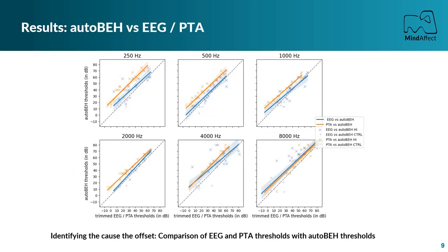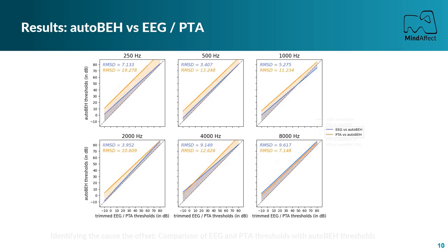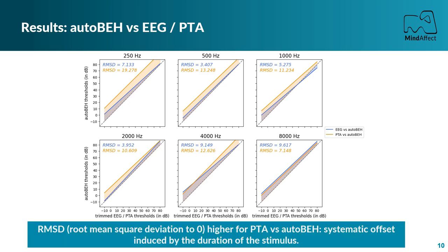We also noted a systematic offset between the EEG and PTA thresholds, characterized by a high intercept. To evaluate if this could stem from the duration of the stimulus — which is 30 ms for the EEG test and 1 to 3 seconds for PTA — we compared EEG and PTA with a third condition: a behavioral audiometry using also 30 ms pure tones. By extracting the root mean squared deviation of the two linear regressions, we found that this offset only appears when comparing with PTA, indicating that it is likely due to the differential perception of a 30 ms stimulus versus a stimulus with a duration over 1 second.